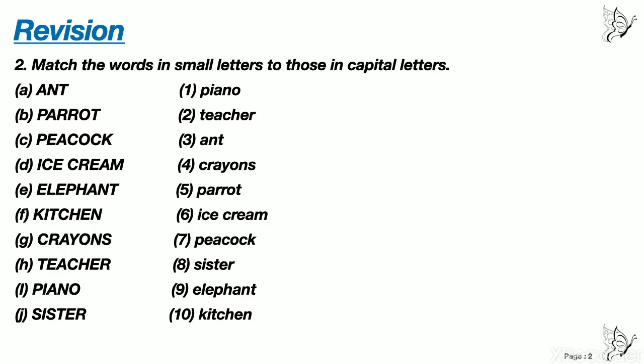Match the words in small letters to those in capital letters. Number a: ant, b: parrot, c: peacock, d: ice cream, e: elephant, f: kitchen, g: crayons, h: teacher, i: piano, j: sister. And on the right hand side you have the same words, okay, but in small letters.